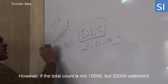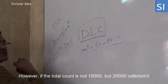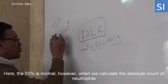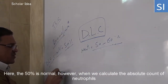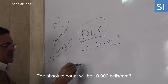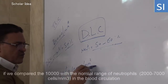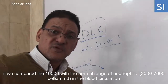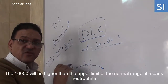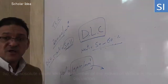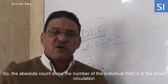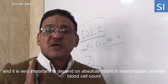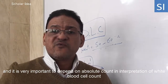However, if the total count is not 10,000 but is 20,000 or 30,000, the 50 percent may appear normal. But when we calculate the absolute count of neutrophils, the absolute count will be 10,000 per cubic millimeter. If we compare 10,000 with the normal range of neutrophils in the blood circulation, the 10,000 will be higher than the normal range — it means neutrophilia. So the absolute count shows the actual number of individual white blood cells in the blood circulation, and it is very important to depend on the absolute count in interpretation of the white blood cell count.